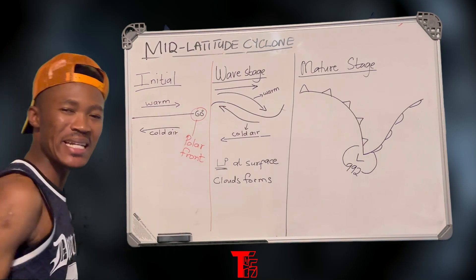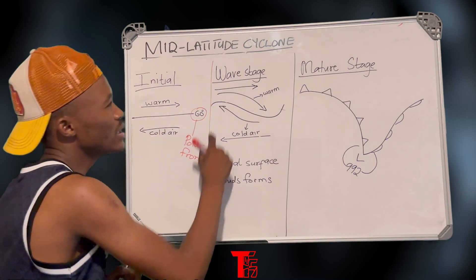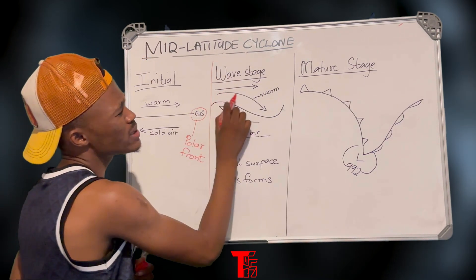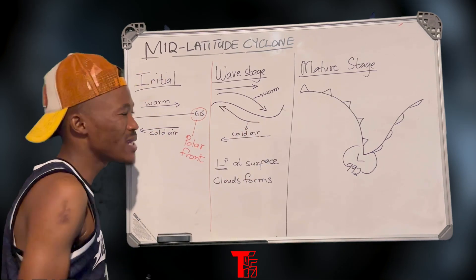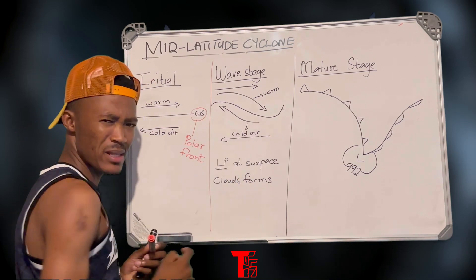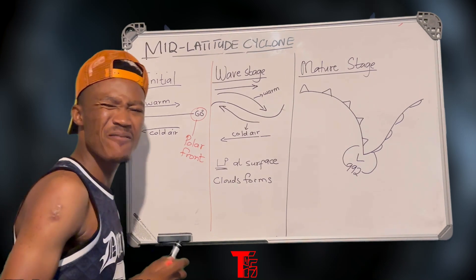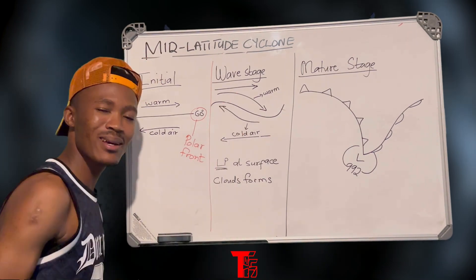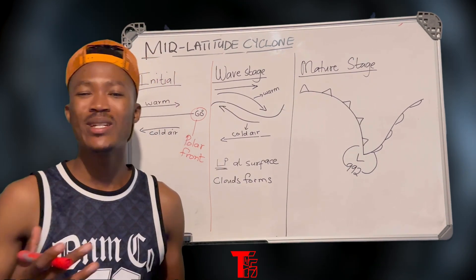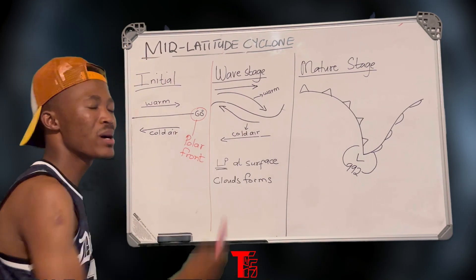As the mid-latitude cyclone progresses into the wave stage, the warm westerly wind starts to push further polewards and the cold polar easterlies push further equatorward. As this happens, the shape of the polar front starts to be deformed due to the disturbance occurring at the polar front. The disturbance may be due to different temperatures between land and sea, or mainly due to the velocity at which these two air masses move.